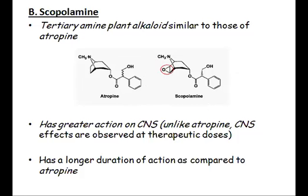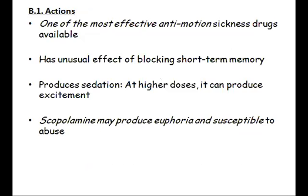Scopolamine has greater action on the central nervous system than atropine, since it can cross the blood-brain barrier even at low concentrations. Therefore, CNS effects are observed with scopolamine even at therapeutic doses. It also has a longer duration of action compared to atropine.